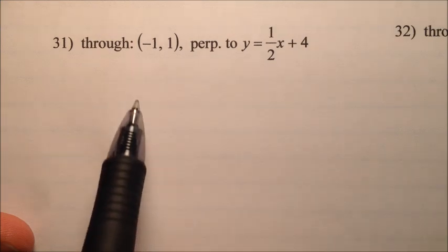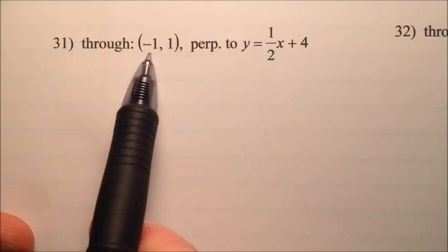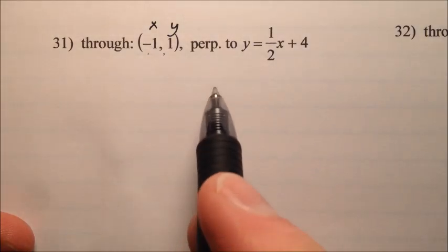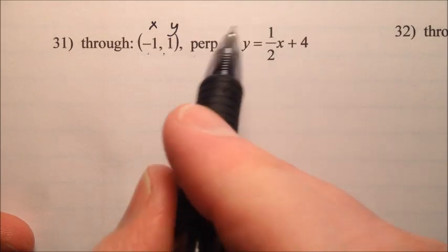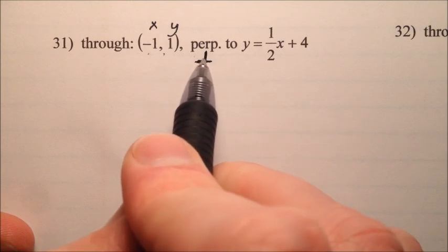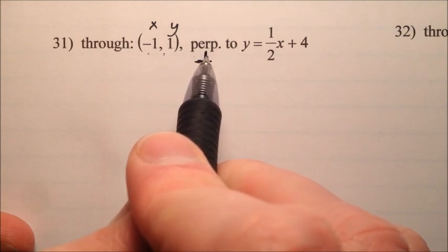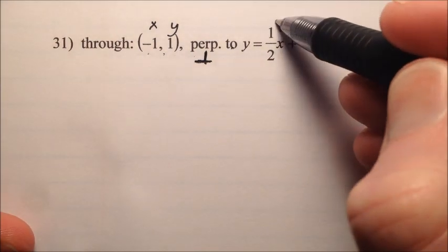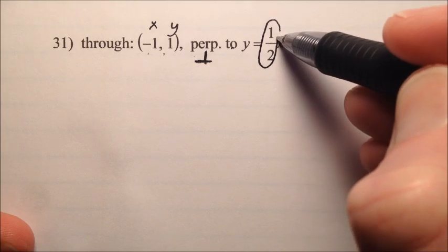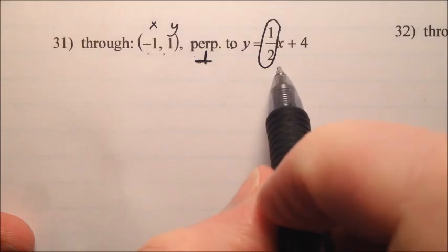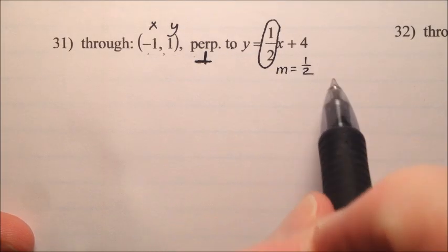In number 31, we're told that we have a new line, it's going to pass through negative 1, 1, so we have an x and a y value we can use. We're also told that it's perpendicular, and the symbol for perpendicular is like this, so it might show up this way on a test. It might give you the symbol right there, perpendicular to this line. What is the relationship for the slopes of lines that are perpendicular to one another? We know right here the slope of this thing is 1 half.